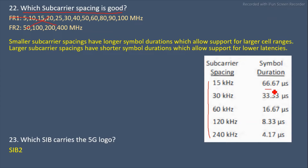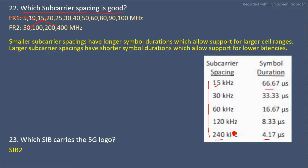For 60 kHz the symbol duration is 16.67 microseconds, for 120 kHz it is 8.33 microseconds, and for 240 kHz it is 4.17 microseconds. So where we use low subcarrier spacing like 15 kHz, the symbol duration is high, and where we use high subcarrier spacing like 240 kHz, the symbol duration is low.